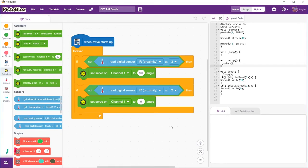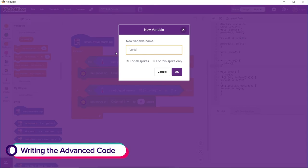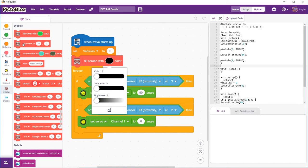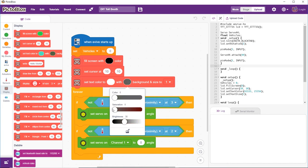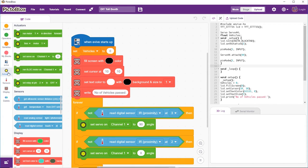You can also display the number of cars or vehicles passed and the status of the barrier by making a few changes in the code. Make a variable for storing the number of vehicles that passed by and initialize it with 0. Use display blocks to display number of vehicles passed on evive's screen.